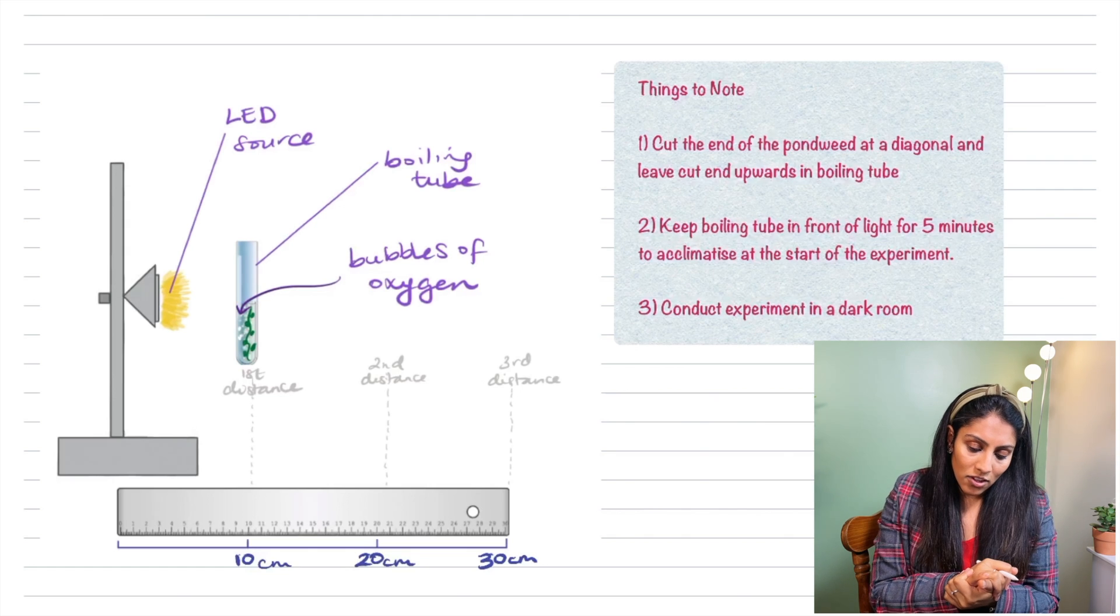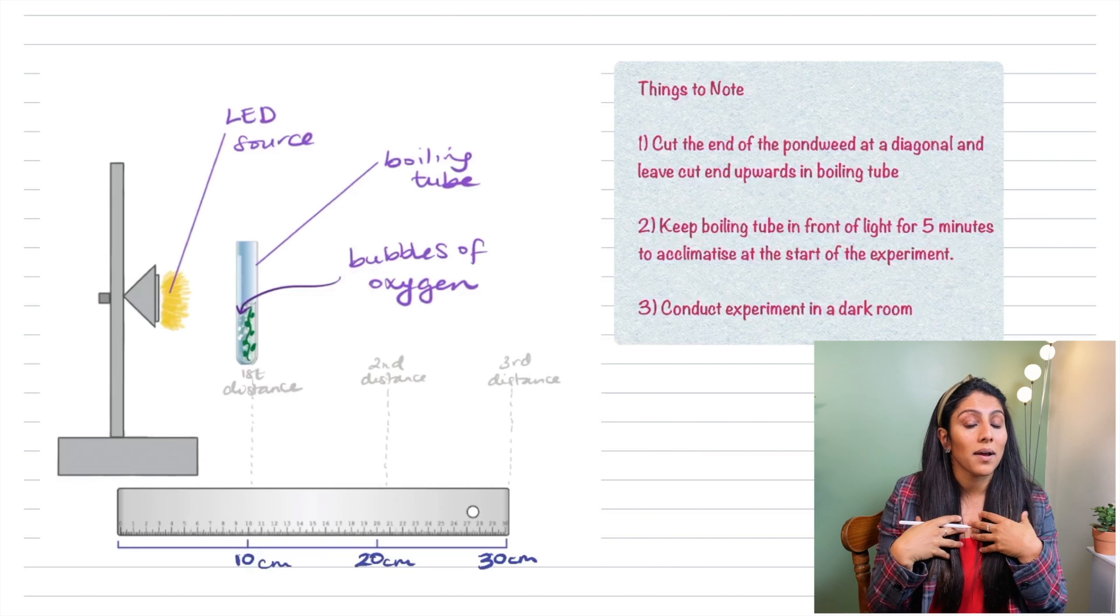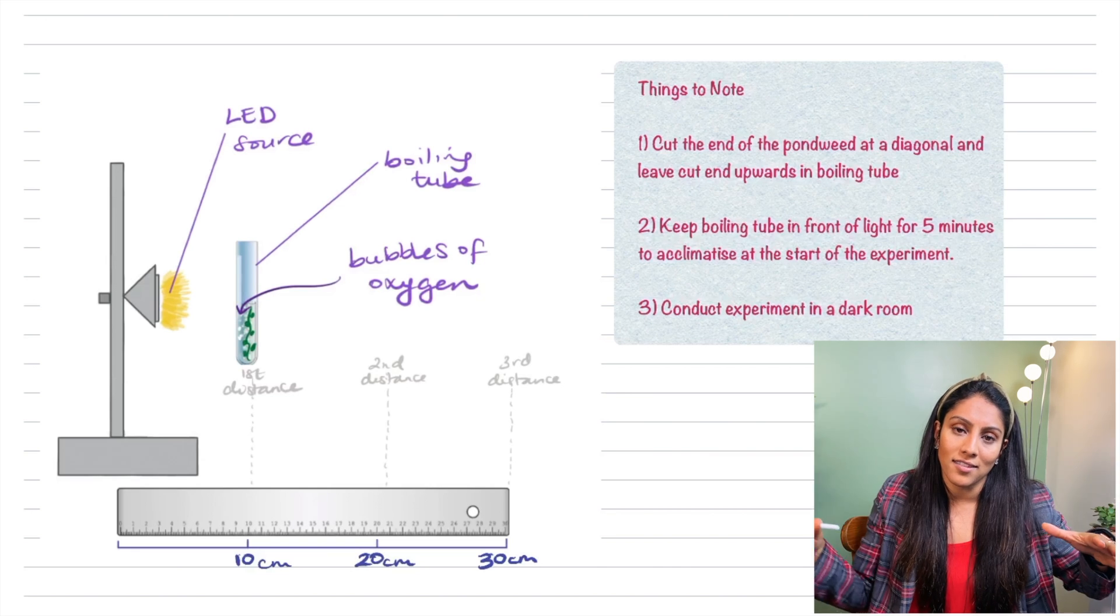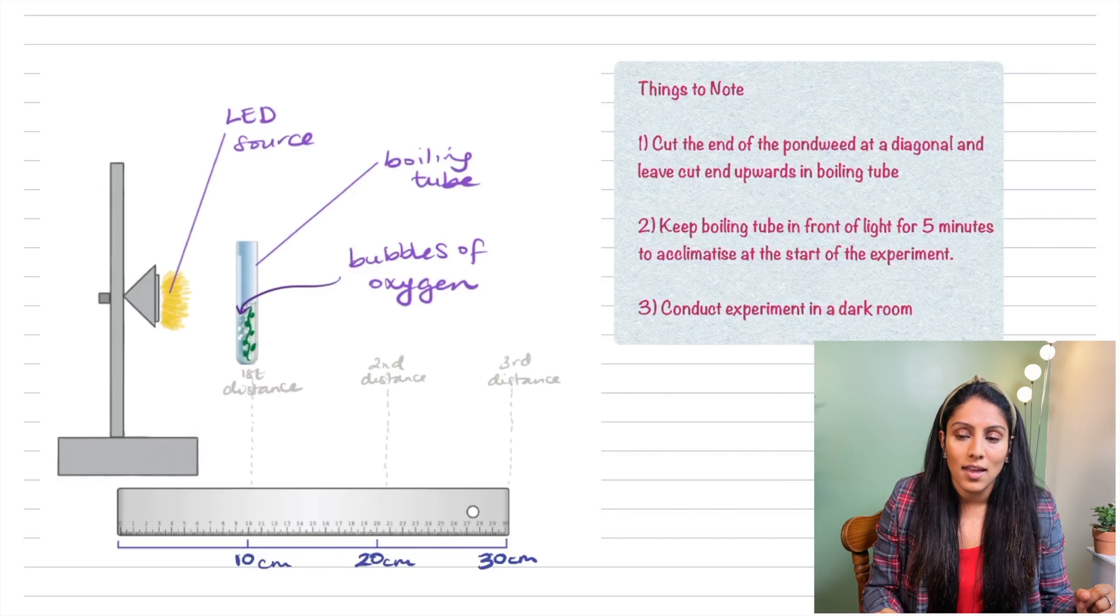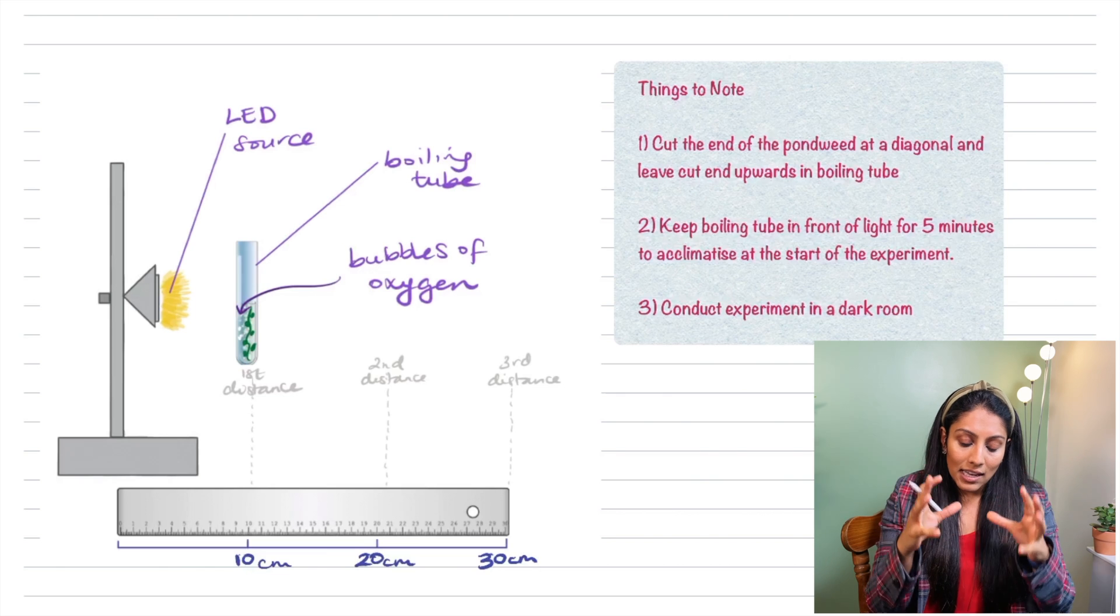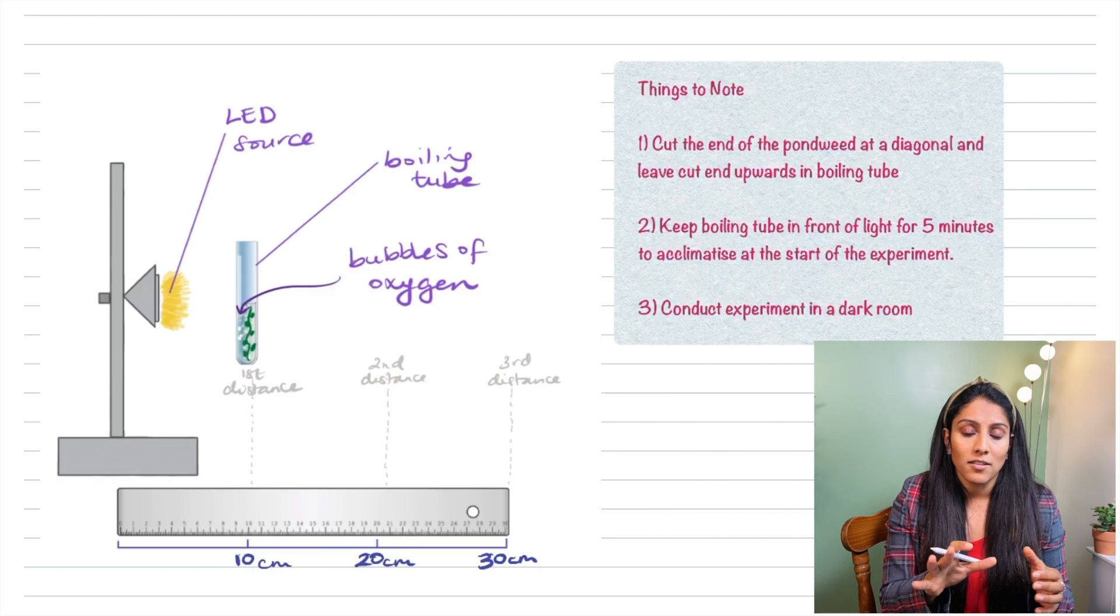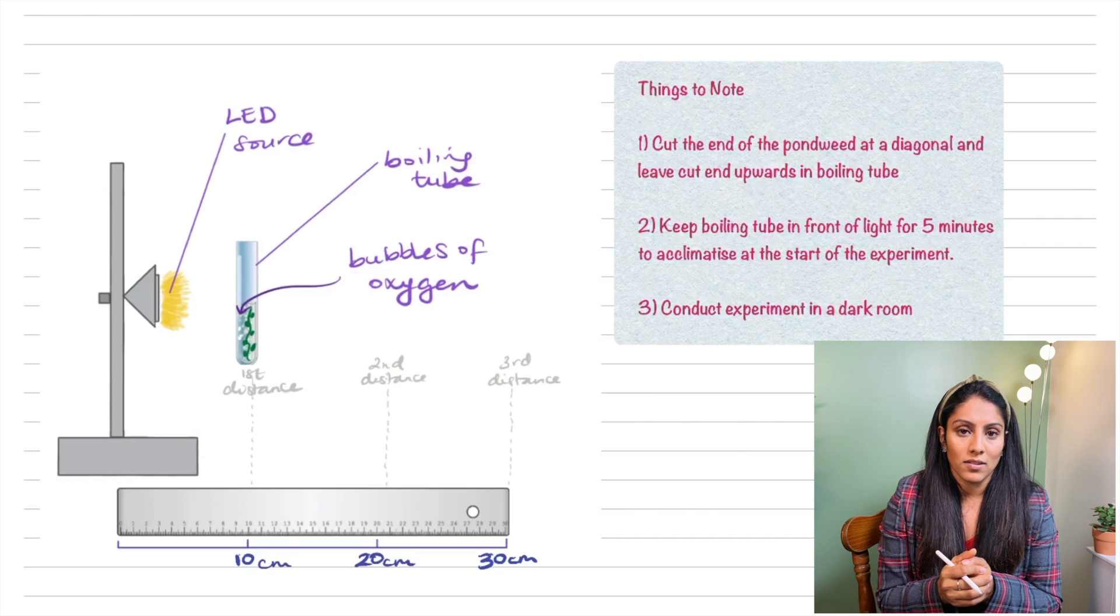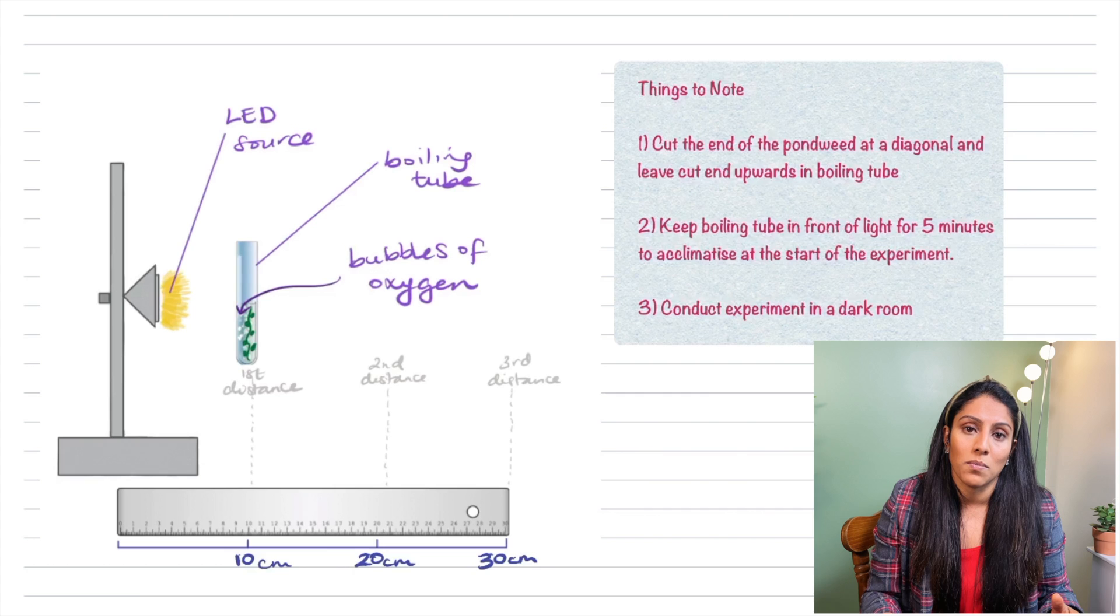The second thing that you want to be aware of is that you should conduct the experiment in a dark room. When I do it in my classroom I shut all the blinds because the only light we want is the one that comes from the LED source. Thirdly you're going to leave the boiling tube and the pondweed in front of the light for five minutes before you even start taking results to allow the pondweed to acclimatise to the experiment and to the light.